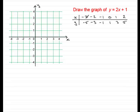So if we start to plot these coordinates, we've got minus 3, minus 5 — that's not on the graph but it would be down here somewhere. Minus 2, minus 3 would be that point there. Minus 1, minus 1. Then 0, 1 — that point there. 1, 3 — and then we've got 2, 5, which is off the graph.